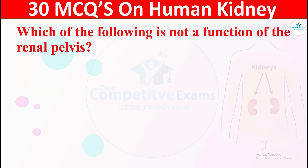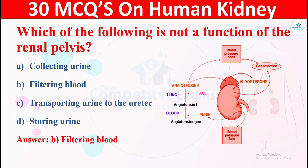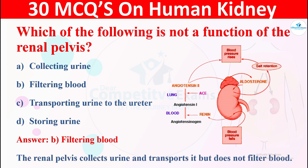Question 19: Which of the following is not a function of the renal pelvis? The options are: A) collecting urine, B) filtering blood, C) transporting urine to the ureter, or D) storing urine. The right answer is B, filtering blood. The renal pelvis collects and transports urine but does not filter blood.